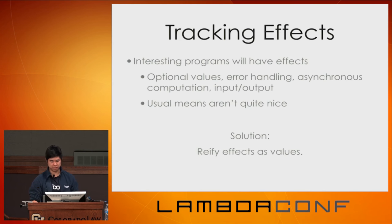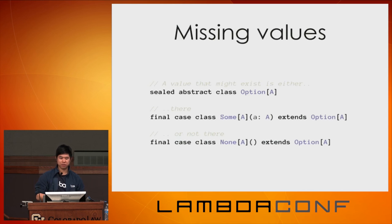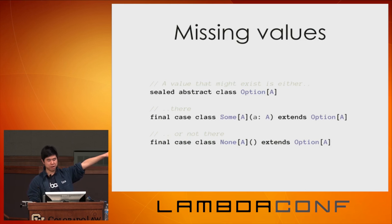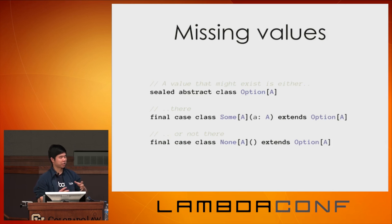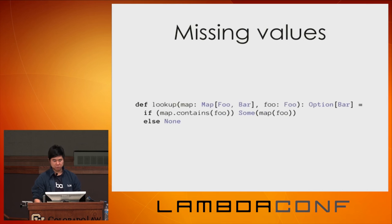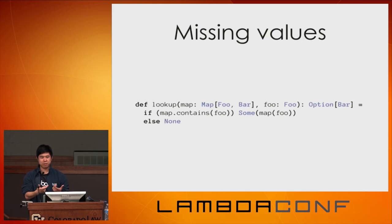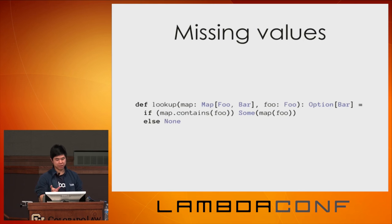The solution is to reify effects as values. A missing value can be represented by Option. Concretely: Option is a sealed abstract class with two constructors — Some, which contains the value you care about, and None, a sentinel representing absence of value. When you do a lookup in a map from Foo to Bar, if the key exists you wrap the value in Some; otherwise you return None. When you look at the type signature — given a Map[Foo, Bar] and an arbitrary Foo, you may or may not get a Bar back — you don't have to worry about exceptions, null, or null checks.